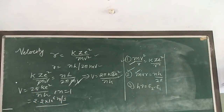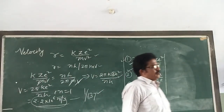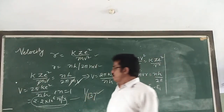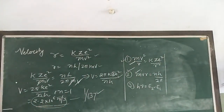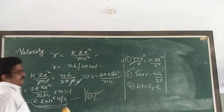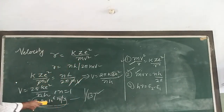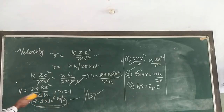This velocity is roughly equal to 1/137 of the velocity of light in vacuum. Furthermore, the orbital velocity of the electron in the outer orbit is smaller compared to its value in the inner orbit — as n increases, velocity decreases.